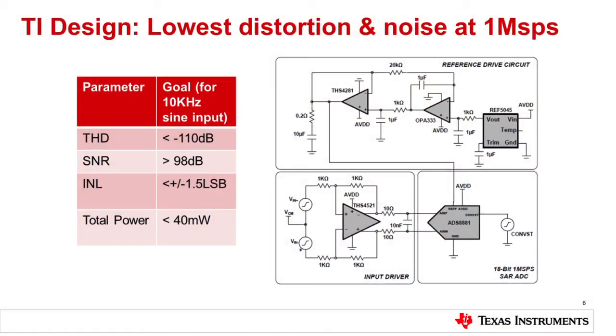For this TI design, we're going to choose one and talk about it in a lot of detail. This one revolves around the lowest distortion and noise at 1-megasample per second. We have some parameters and goals to achieve.